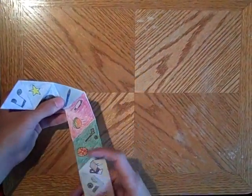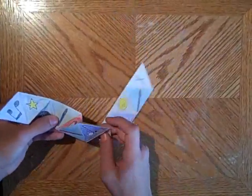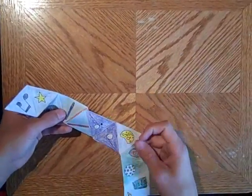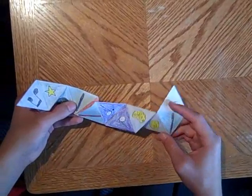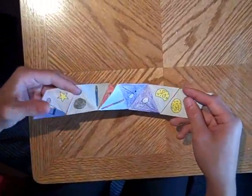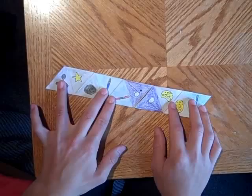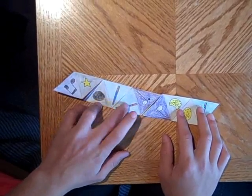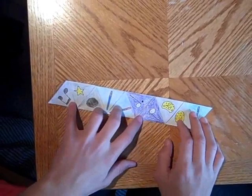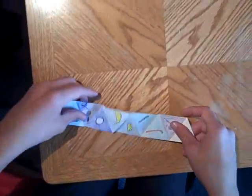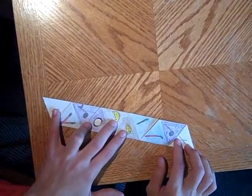And then you do that same pattern for the whole hexaflexagon. Keep folding over and over and over and over until you get to the end where you flip the X under so you have a pattern of ABB CC AA BB and then C. And on the back you can tell you did it right if you have two X's on the end.